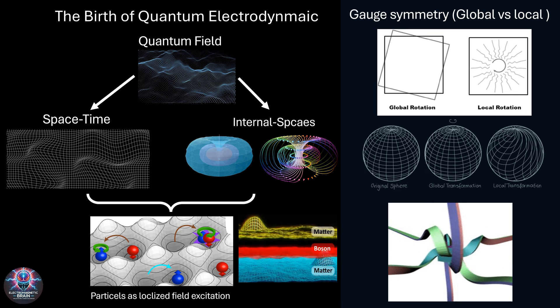It all starts with spacetime, the very fabric in which everything unfolds. Think of it as a dynamic grid, constantly bending and warping under the influence of energy and mass. Then, beyond spacetime, lie internal spaces, hidden mathematical dimensions that govern the behavior of particles and forces. These internal structures give rise to fundamental properties, like charge and spin, which dictate how particles interact.